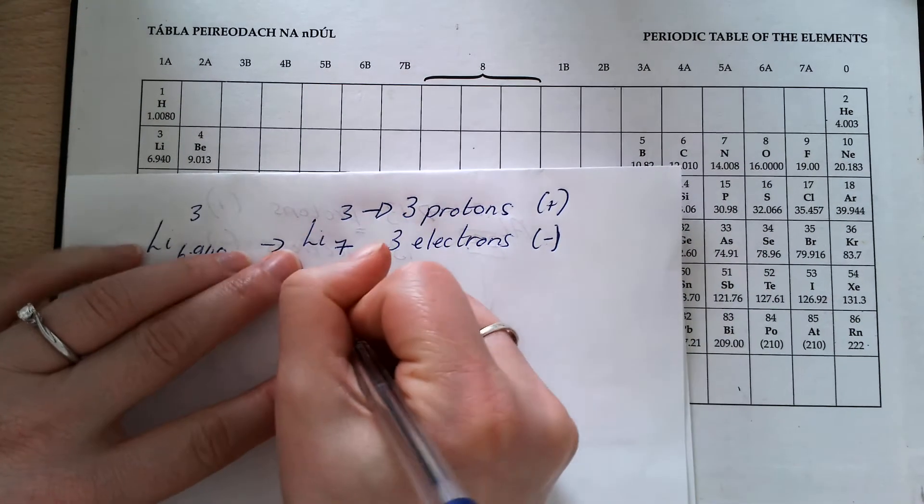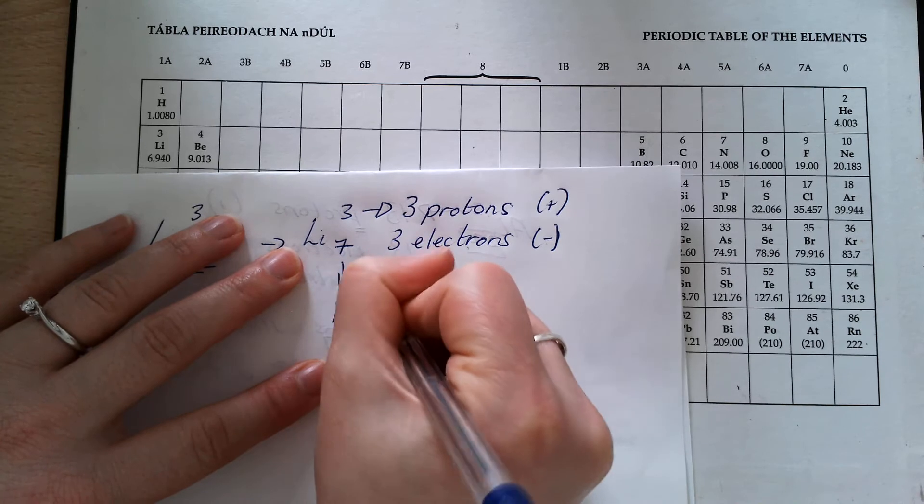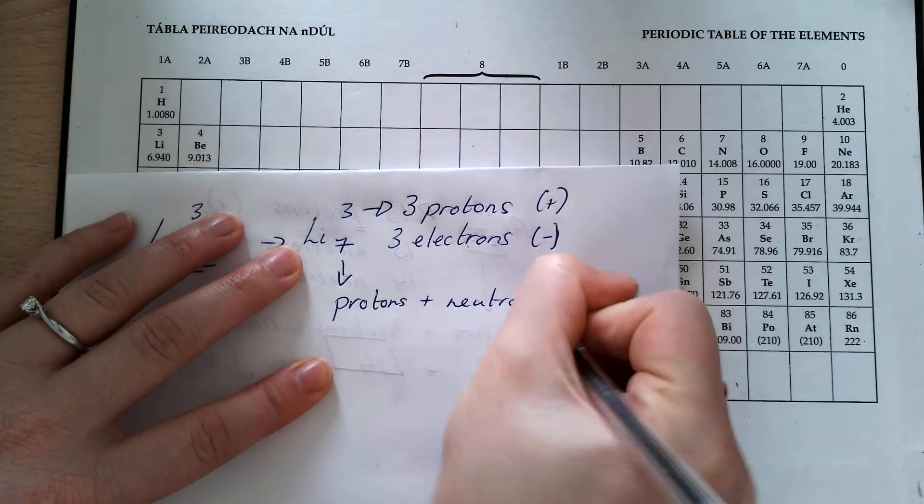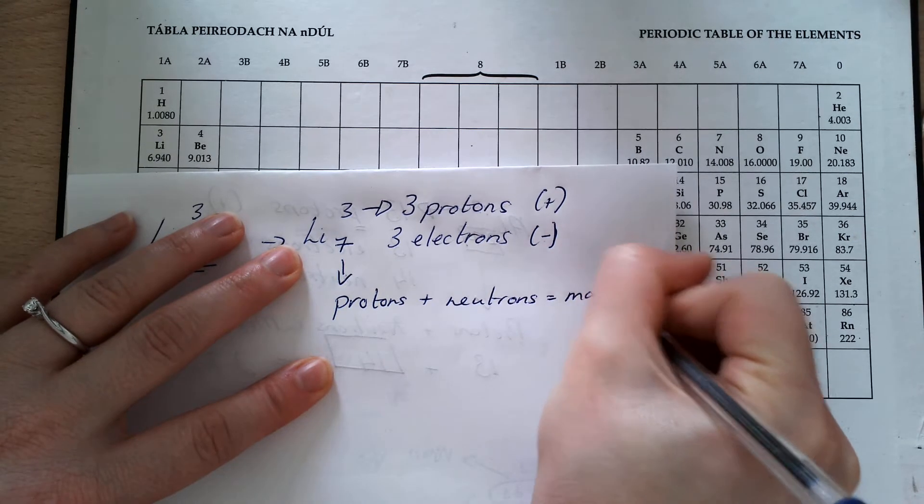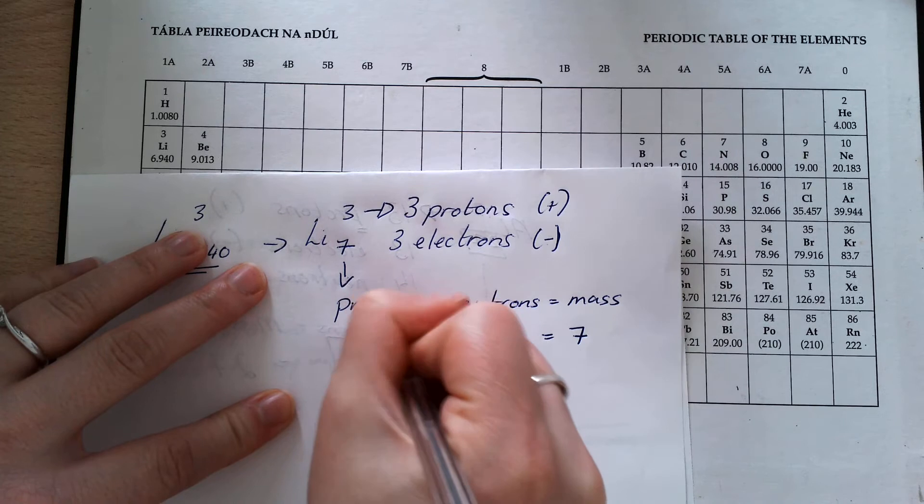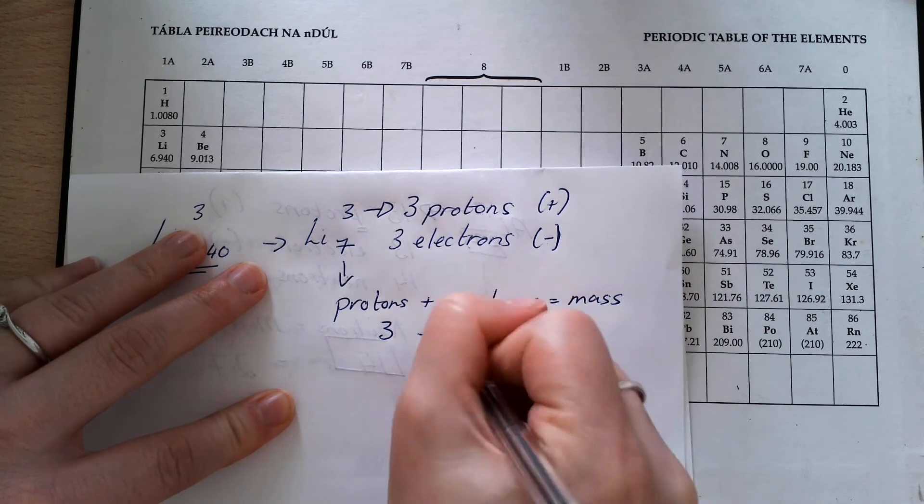And my mass number is my number of protons and neutrons. So that's what my mass number is. That's equal to 7. I have already worked out I have 3 protons.